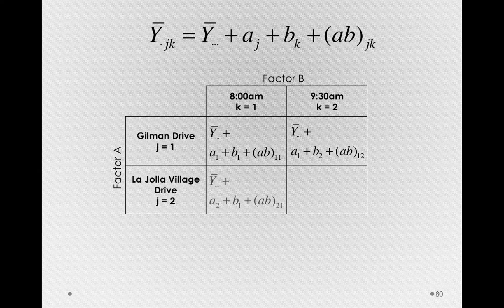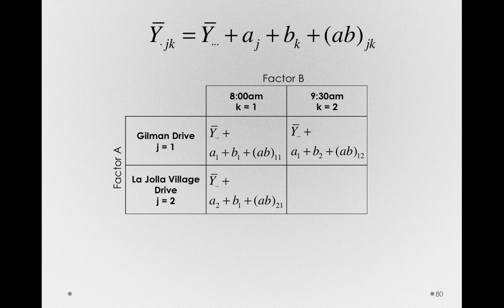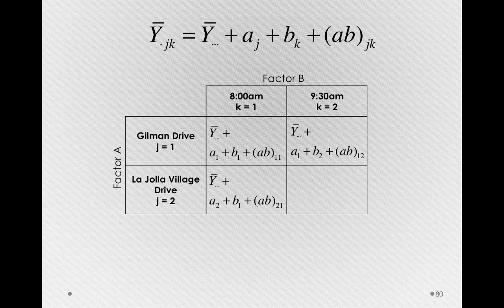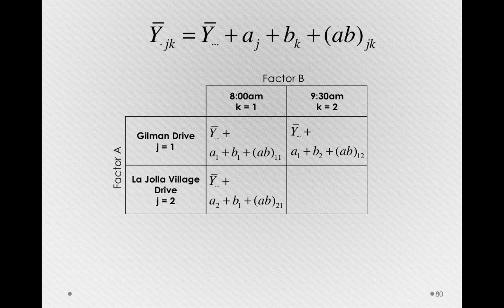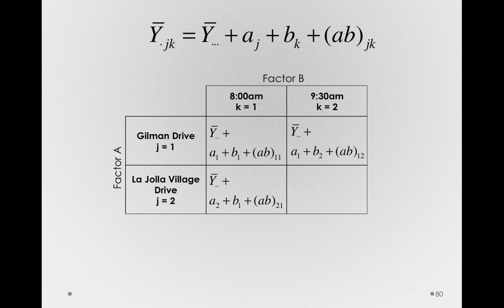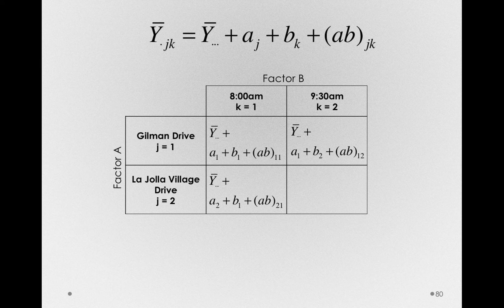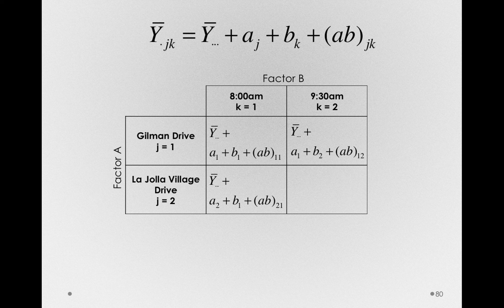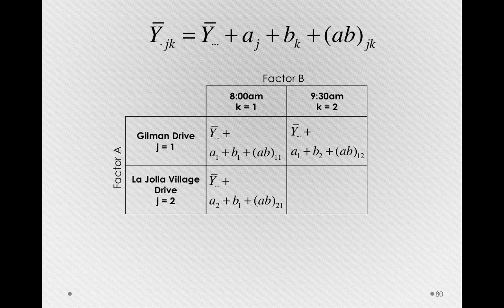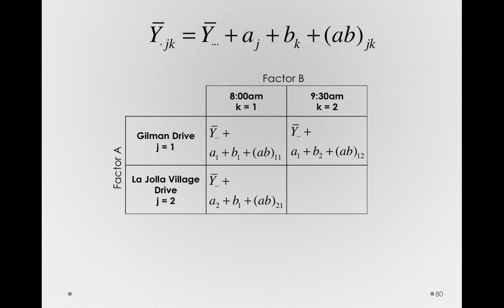For La Jolla Village Drive at 8 a.m., we'll have y bar dot dot dot plus a_2, since we're in the second level of factor A, plus b_1, the same b_1 that we found when we were doing Gilman Drive at 8 a.m. Notice that that is shared between both 8 a.m. groups, plus ab_21. Now this is a different ab term than any of the others.